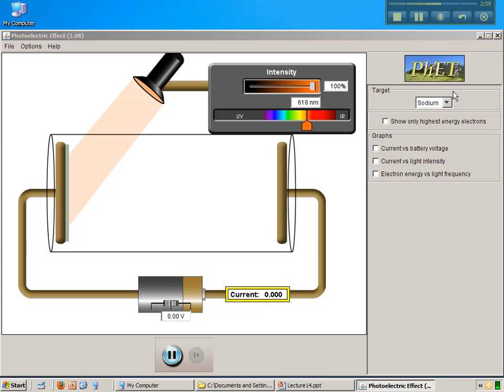And for a sodium electrode over here in the target electrode, then I can vary the intensity and the wavelength of the light to see when I start to get photoelectrons.